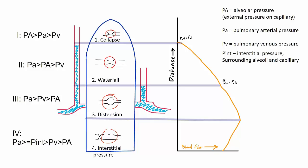Zone four is the extra zone — a bonus concept. It doesn't follow the same pattern as zones one, two, and three. In zone four, interstitial pressure from the interstitium of the lung is actually collapsing the blood vessels. The interplay between pulmonary arterial pressure, pulmonary venous pressure, and alveolar pressure no longer applies, and blood flow is decreased purely because interstitial pressure is collapsing the vessel. You see this in areas of atelectasis.